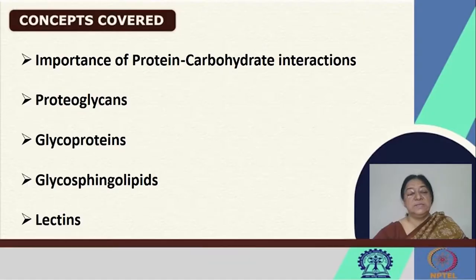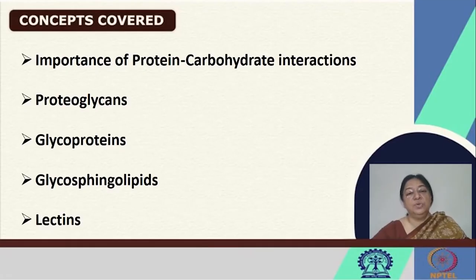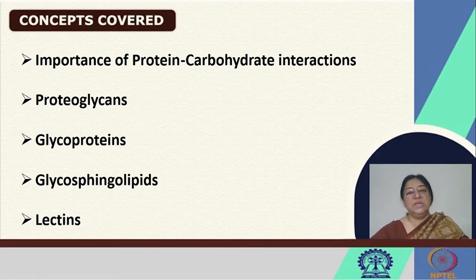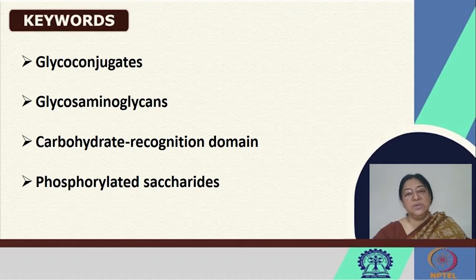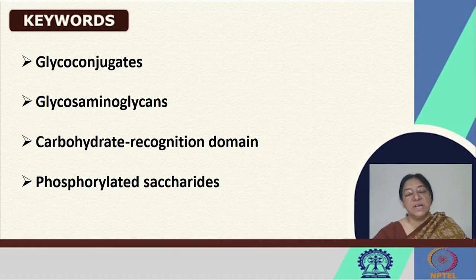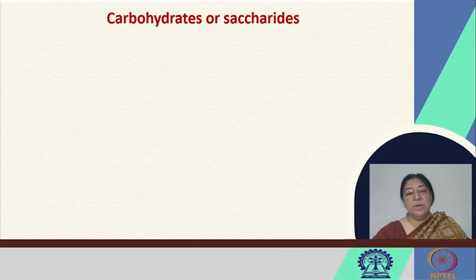We start off with protein-carbohydrate interactions. What we want to look at is the importance of protein-carbohydrate interactions, what we mean by proteoglycans, glycoproteins, and glycosphingolipids, which are parts of the lipids we had studied in the membrane proteins. We will also look at what lectins are. When we consider glycoconjugates, the carbohydrates are conjugated to the proteins that we saw in the membrane proteins, and their roles are extremely important in signal transduction and several such reactions.